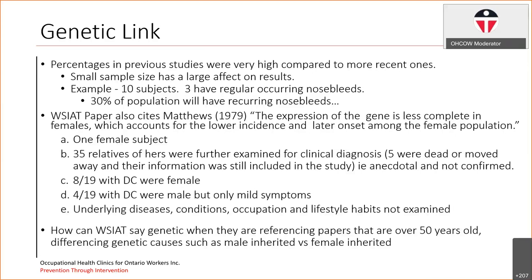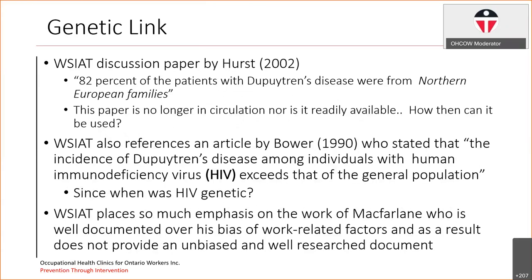The WSIAT paper also cites a study by Matthews in 1979, who states that the expression of a gene is less complete in females, which accounts for the lower incidence and later onset amongst the female population. His study was actually based on one female subject whose family was then examined, and found higher rates of Dupuytren's within the female population of her family than the male. So how can the WSIAT paper say these factors are genetic when they're referencing papers that are over 50 years old, with differing conclusions about male versus female inheritance?